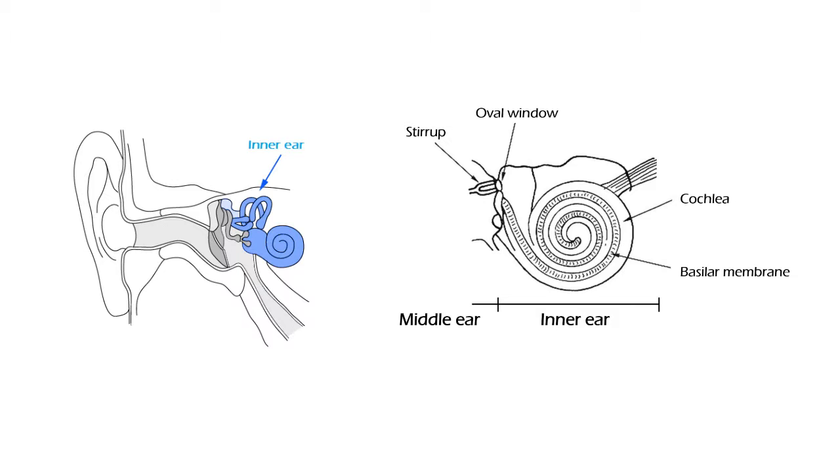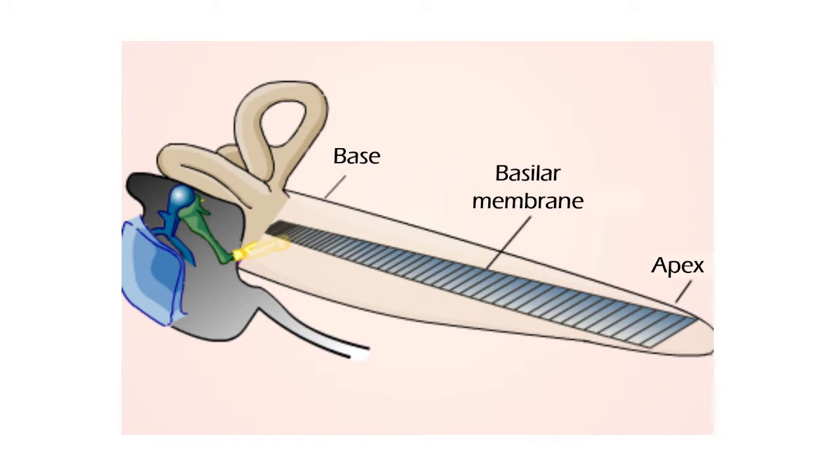Sound is transferred to the cochlea through the oval window, inside of which the basilar membrane is found rolled up. If we unrolled it, we see that this membrane is narrow and rigid at its base, and wide and flexible at the other end, called the apex, changing gradually from one end to the other.